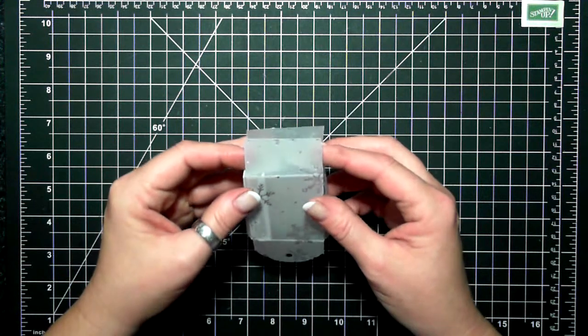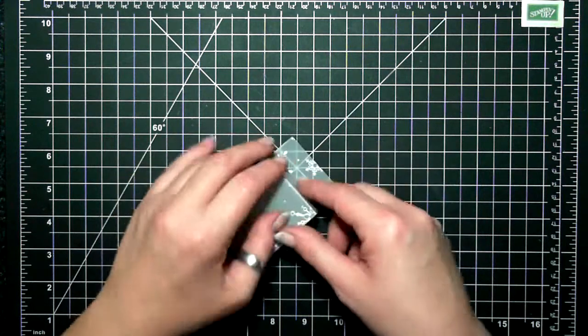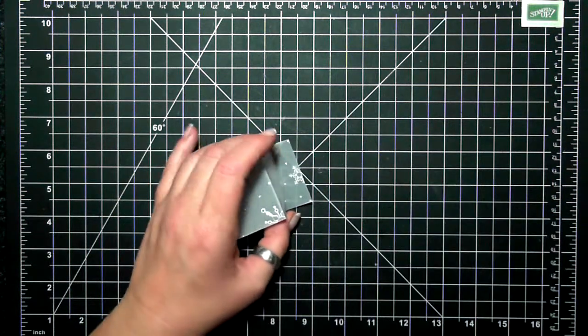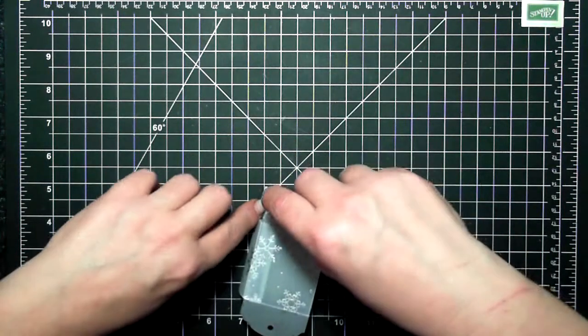Okay, so I'm closing the tabs. I'm taking the back and closing the back, and then I will put some adhesive on that front piece, on the inside front piece.